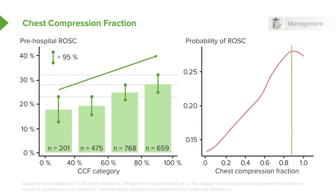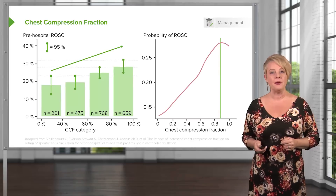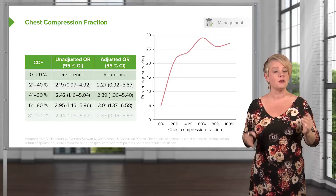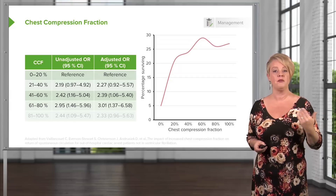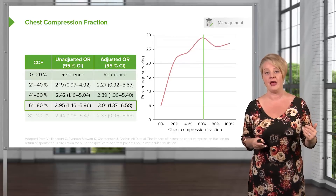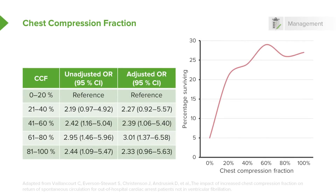In another study looking at chest compression fraction, outcomes were slightly different: a 60 to 80% chest compression fraction produced the highest odds ratio of survival to hospital discharge, which is what the current guideline recommends. So you want a minimum of 60%, ideally closer to 80%. The bottom line is you'll never know your exact fraction during a resuscitation — you just want to make sure your CPR is as continuous and uninterrupted as you can possibly make it.